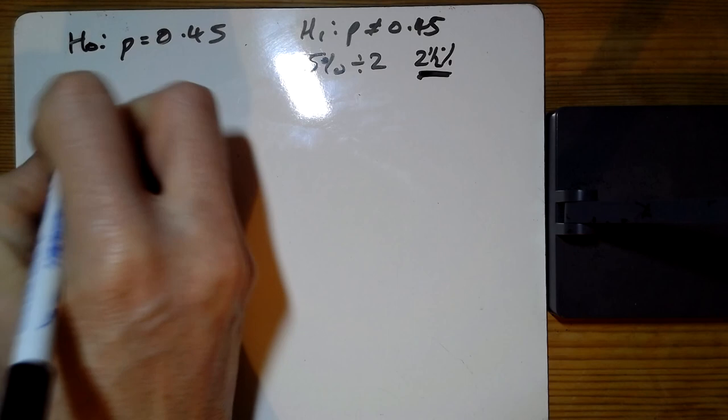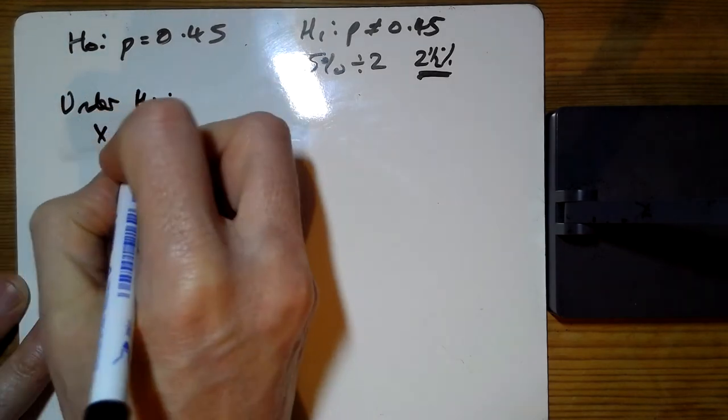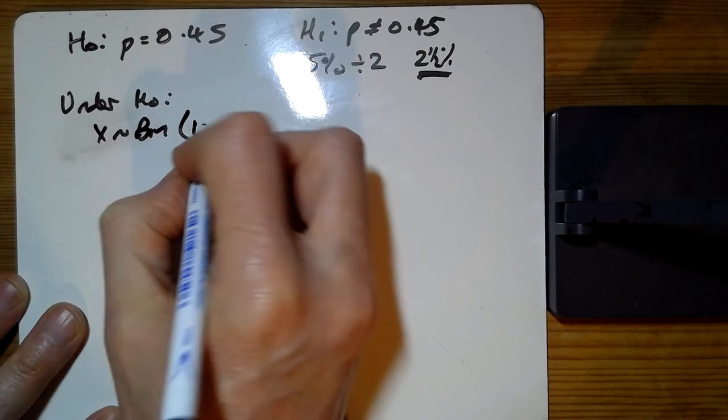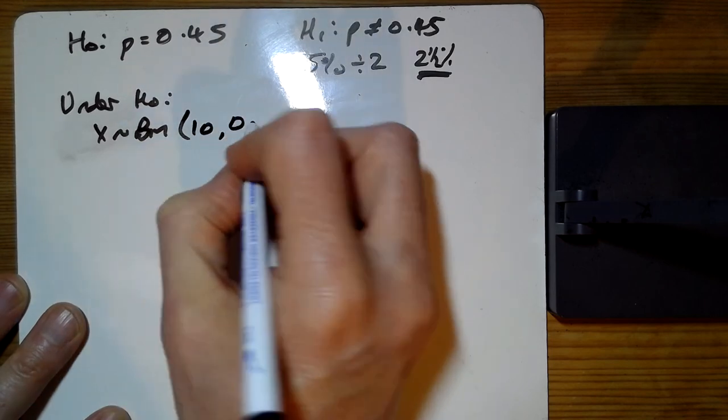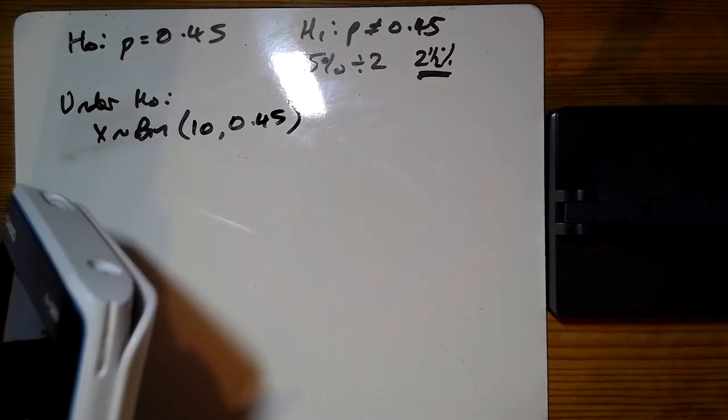Under H0, X is a binomial distribution. How many times are we testing it? We're doing 10, and under H0 it's 0.45, so we've got to do critical values at both ends this time.